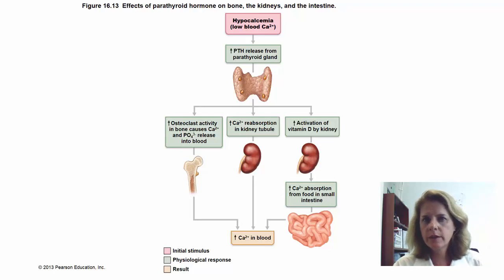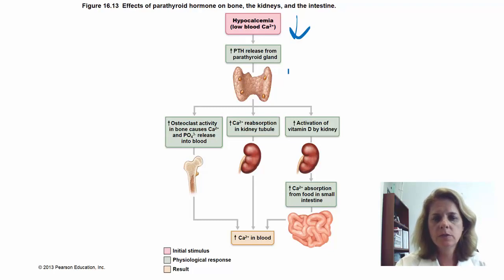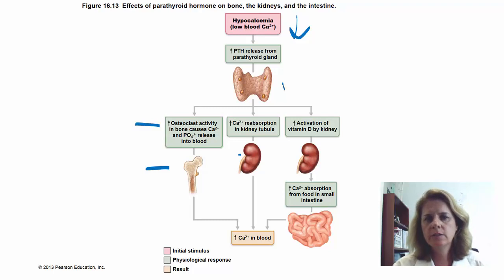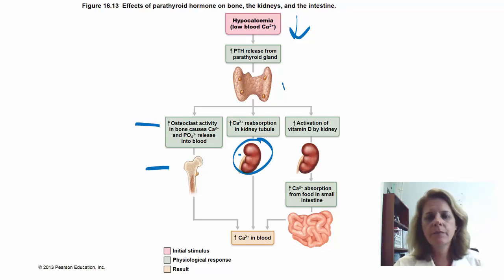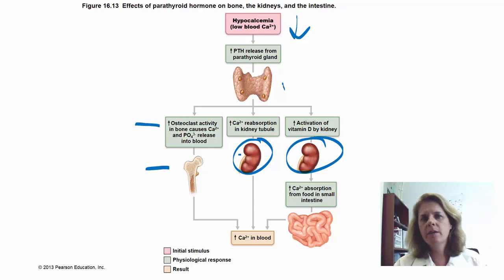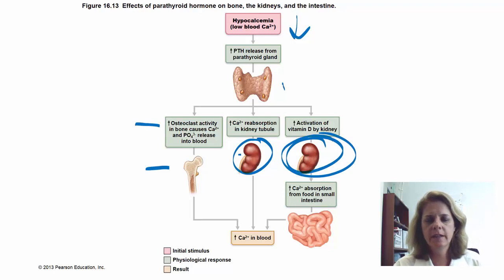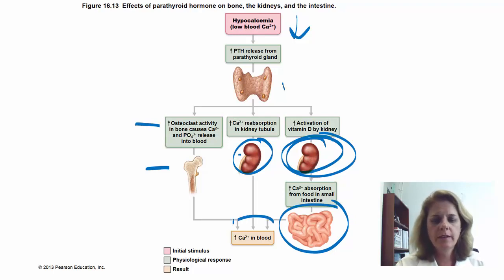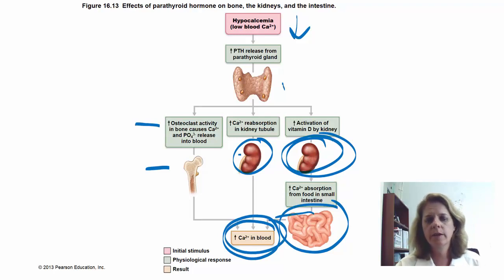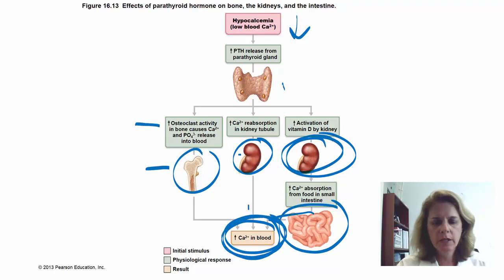So the targets for parathyroid hormone: the stimulus is low blood calcium, which causes release of PTH from the parathyroid gland. Targets are the bone and the kidney. In the bone, increased osteoclast activity degrades bone and releases calcium into the bloodstream. In the kidney, increased calcium reabsorption in the tubule so you don't urinate it out, and increased activation of vitamin D. Increased vitamin D causes more calcium absorption from food, reabsorbing calcium from urine increases blood calcium, and dissolving bone puts calcium into the blood.